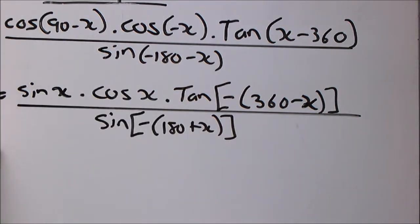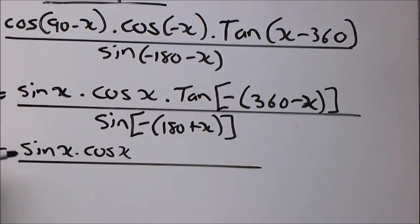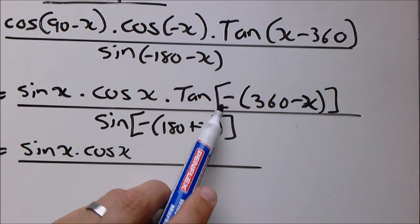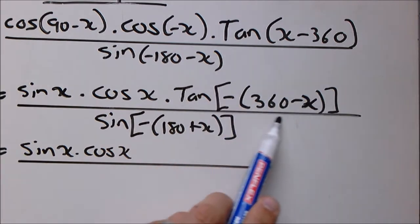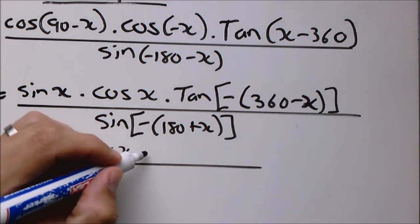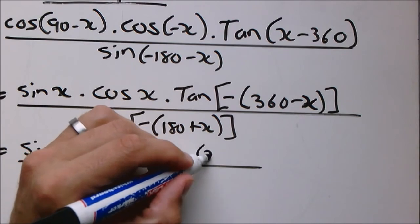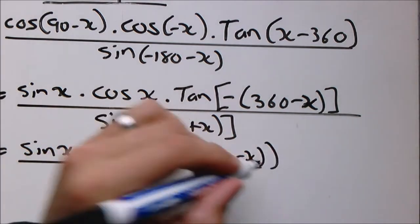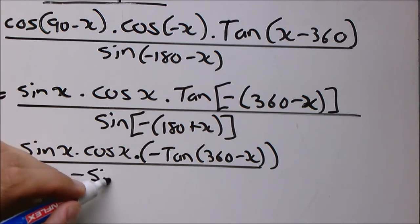So the next step: sin x times cos x. Let's look at this one. So it will be tan of a negative angle. That whole internal bracket right there, that whole thing is the angle. So this becomes minus tan 360 minus x. And the same for the denominator, the negative can be applied exactly as we did previously with our rules.